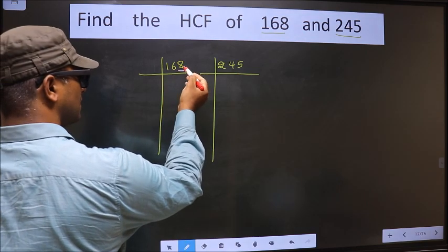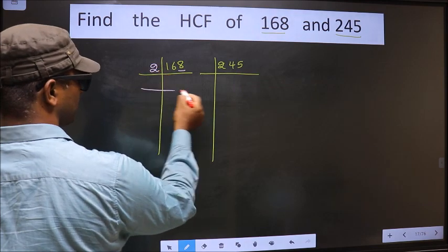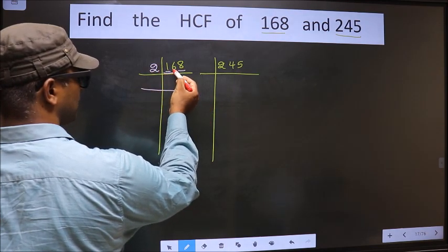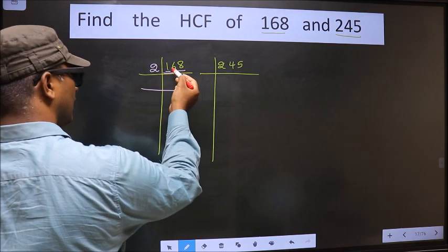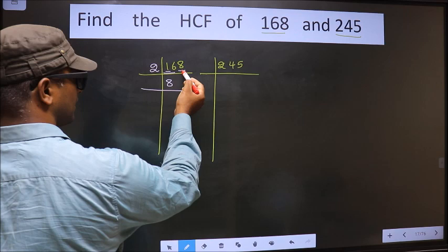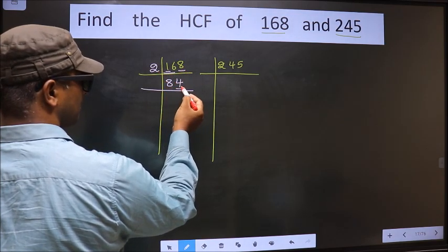For this number, last digit is 8 which is even, so we take 2 here. The first number is 1, smaller than 2, so we take 2 numbers that is 16. When do we get 16 in 2 table? 2, 8, 16. The other number 8, when do we get 8 in 2 table? 2, 4, 8. For this number, last digit is 4, even, so we take 2 here.